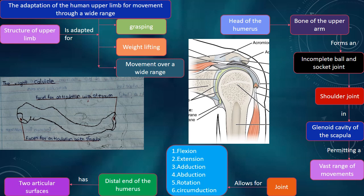The adaptation of the human upper limb for movement through a wide range. The structure of the upper limb is adapted for grasping, weight lifting, and movement over a wide range.